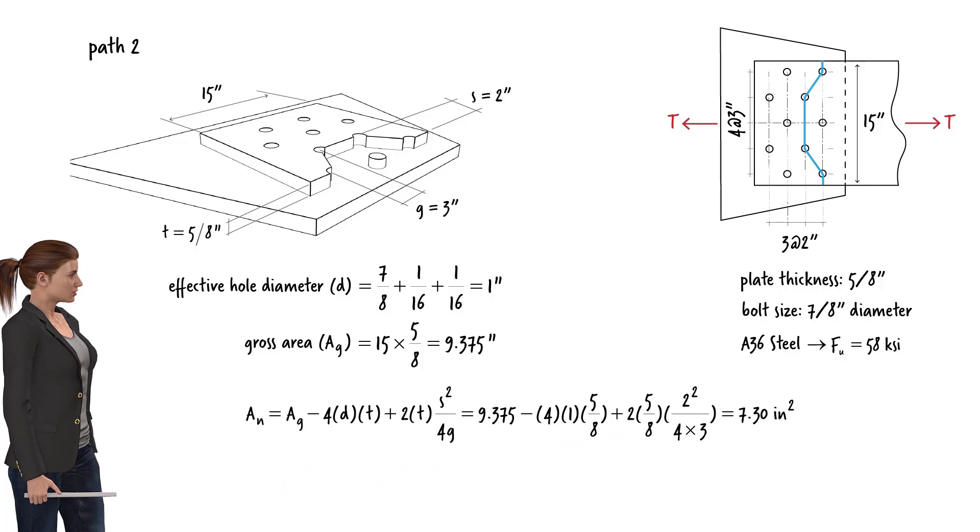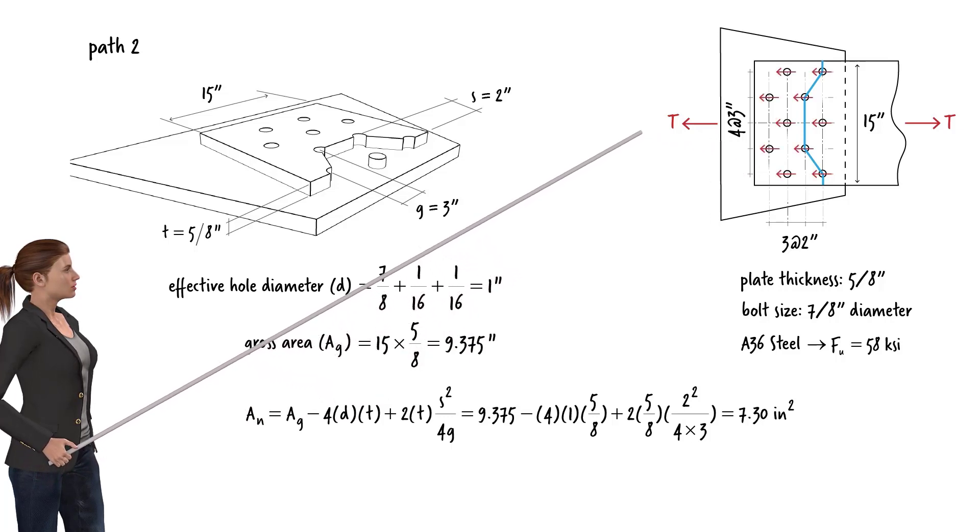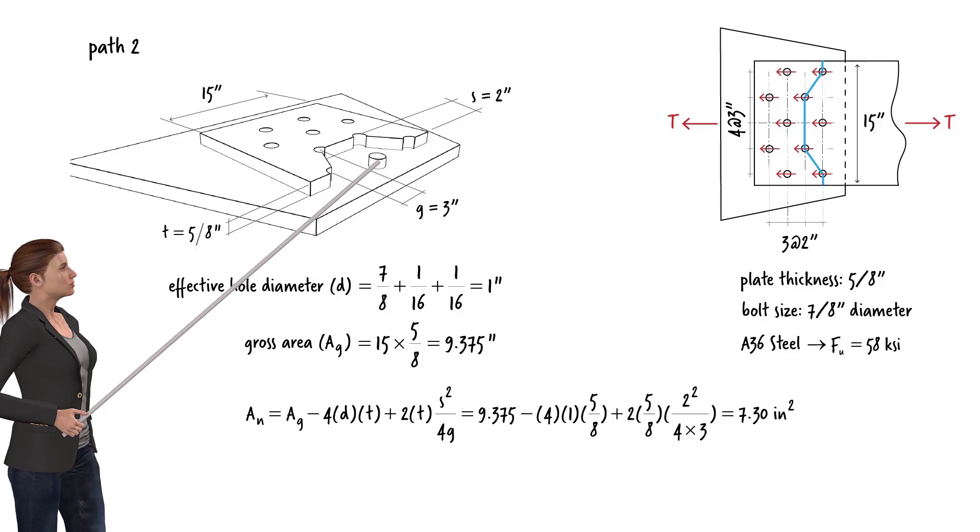However, the axial stress along this path is not caused by a force of T – rather, a force of 9/10 of T causes it. We assume that each bolt carries an equal share of the axial force – 1/10 of T. Therefore, this bolt has transferred a force of 1/10 of T to the gusset plate before the stress reaches path 2. That is, the member along path 2 is subjected to a force of 9/10 of T, not a force of T.